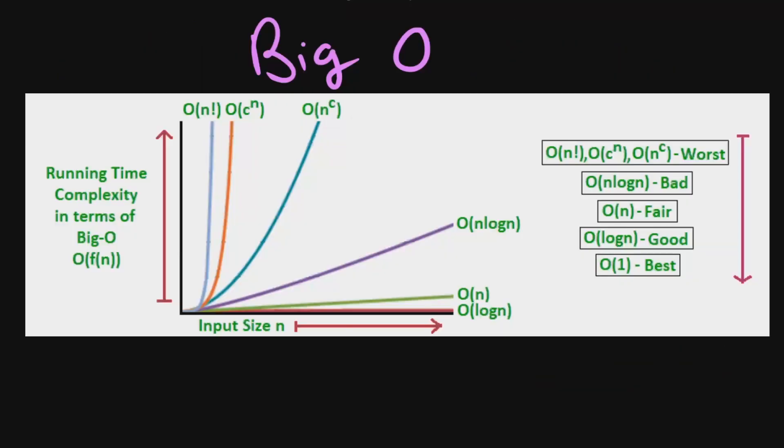So from this diagram, we can see that as the input size increases, we want something that keeps the time complexity fairly low. So anything that scales very quickly as the input size increases would be a pretty bad algorithm. Anything that stays relatively flat is a pretty good algorithm. And I just want to note that O(1) would be somewhere down here, which would just be completely flat all the way down.